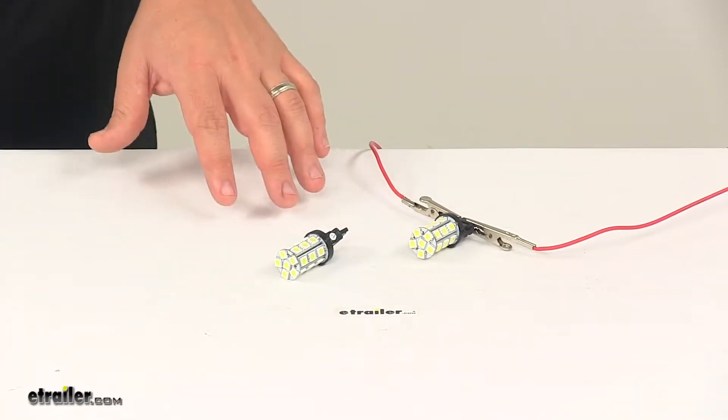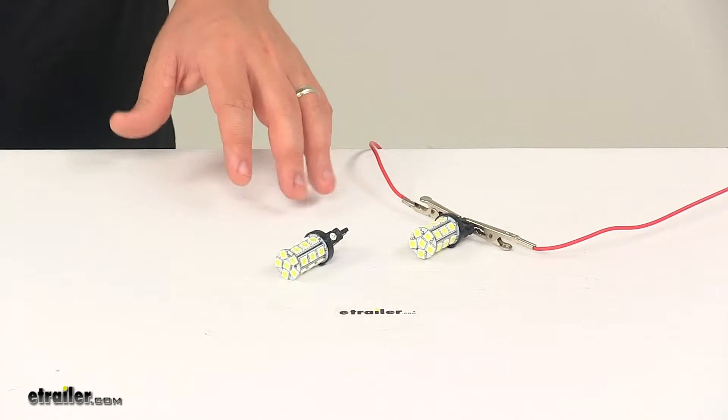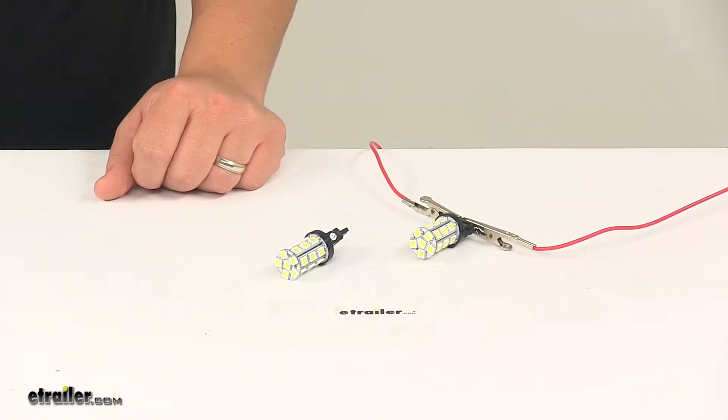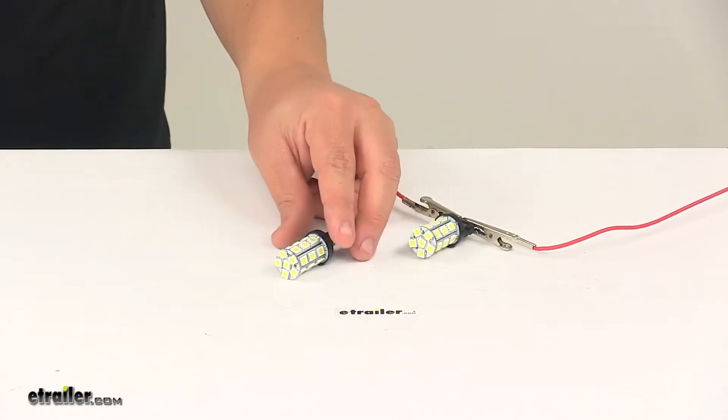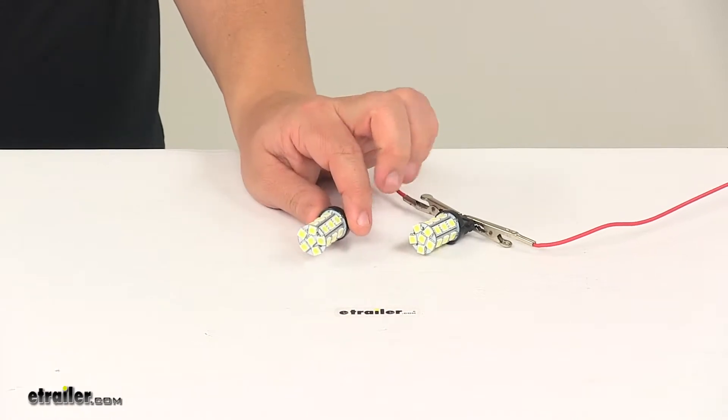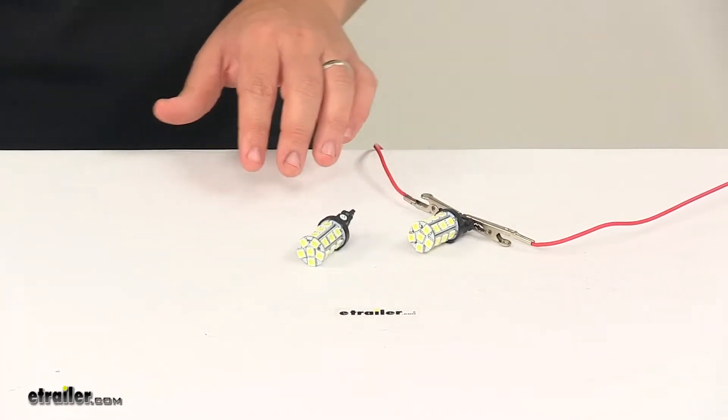These bulbs produce bright white light. It's produced by a total of 48 LEDs, that's 24 LEDs per bulb, and the light is emitted 360 degrees around each bulb. These feature a 50,000 hour LED lifespan.